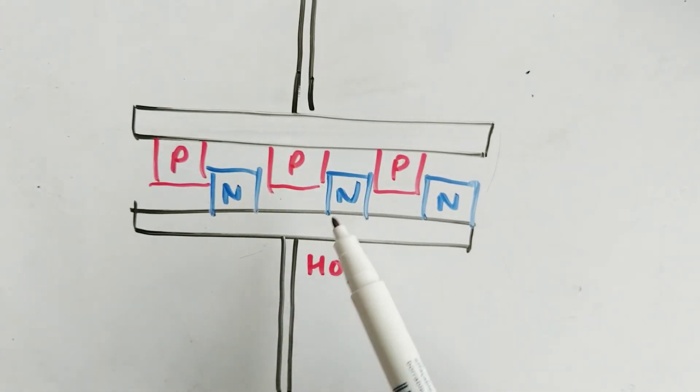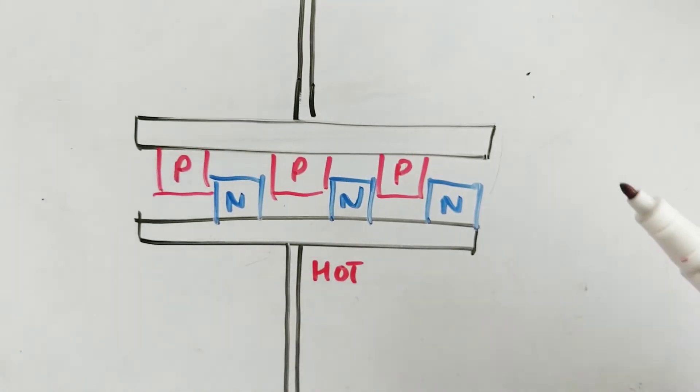then they're going to be attracted across the P-N junction. And that's going to complete a circuit and provide the electrical power to power that motor.